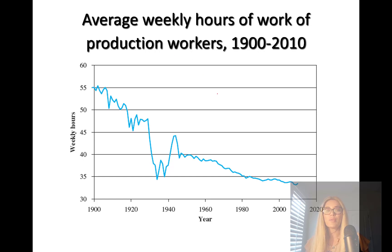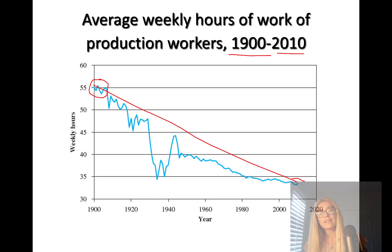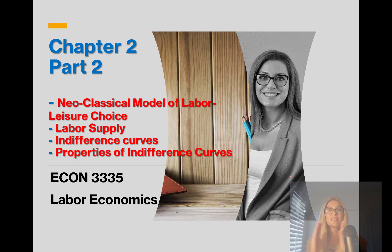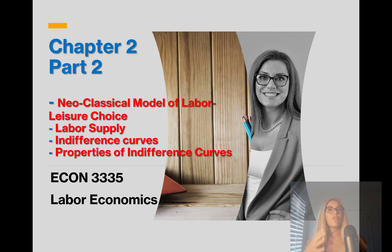These are average weekly hours of production workers. Back in the 1900s at the beginning of the 20th century, production workers worked about 55 hours on average per week. We see a downward trend and it's less than 35 hours now. I'll see you in Part 2, where we start economic theory. Please subscribe to this channel so you'll be notified when I post new videos — it will help with your economic studies.